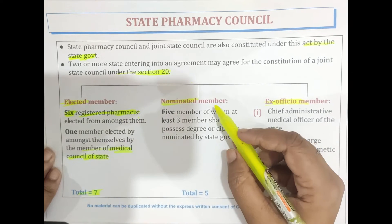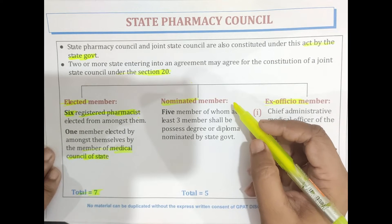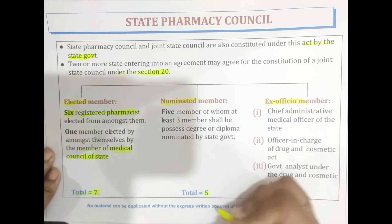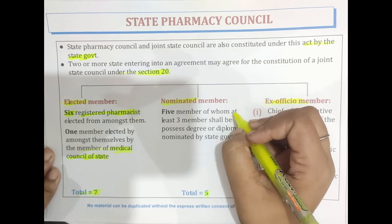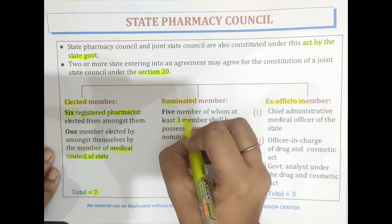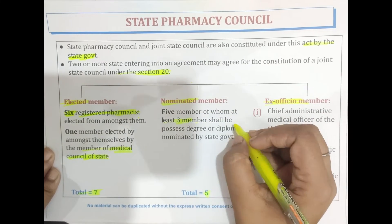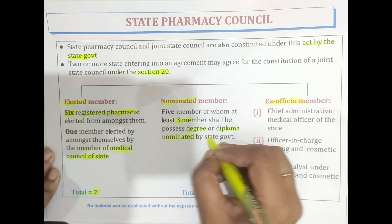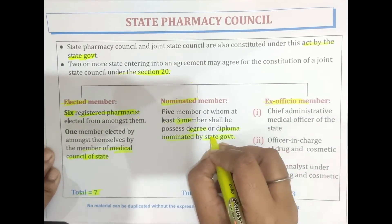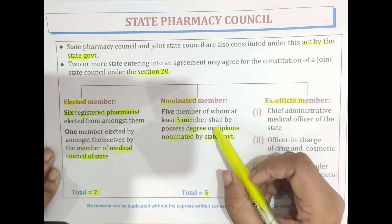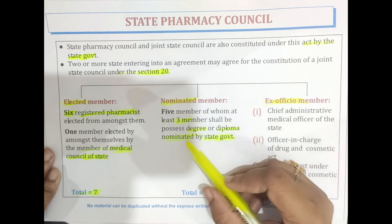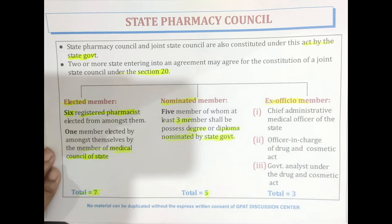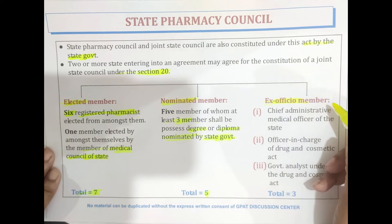The next type is the nominated members. The total nominated members are five, of whom at least three members shall possess a degree or diploma in pharmacy, nominated by the state government.